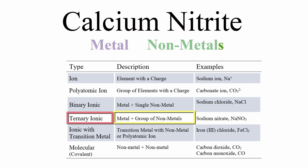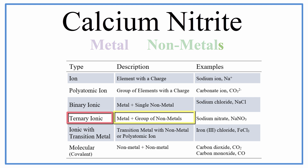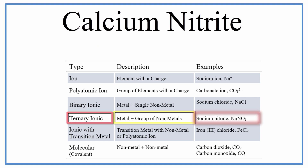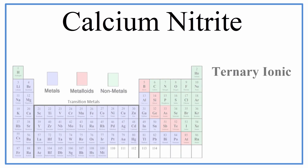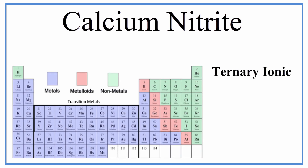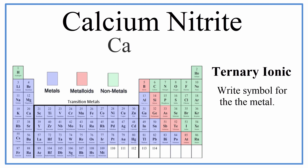An example would be sodium nitrate, NaNO3. To write the formula for calcium nitrate, we'll write the element symbol for calcium just as it appears on the periodic table — that's Ca.